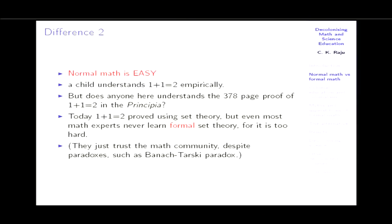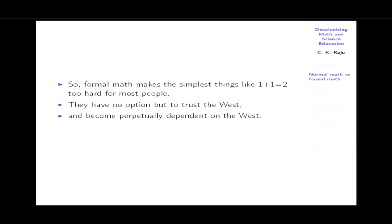Despite issues such as the Banach-Tarski paradox — where you can take a ball of gold, divide it into a finite number of pieces, and reassemble them into two balls of gold of equal size — most mathematicians trust set theory without examination. That's what axiomatic set theory lets you do. Formal math makes the simplest things too complicated. You have to trust the West at some stage and therefore become perpetually dependent on the West, constantly seeking their approval and their postulates.